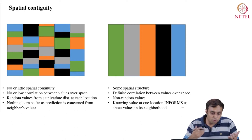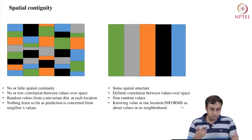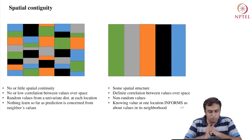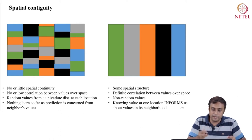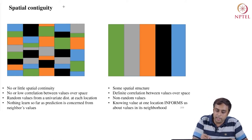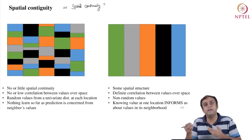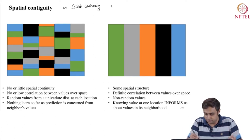Spatial contiguity could also be called spatial continuity — ultimately we are thinking formally about spatial dependence.